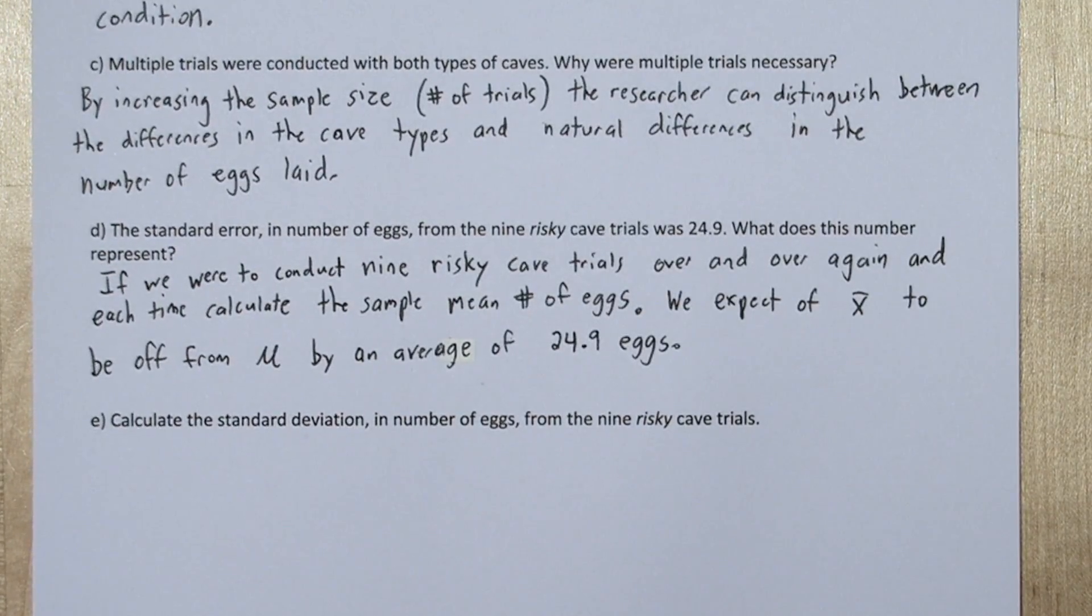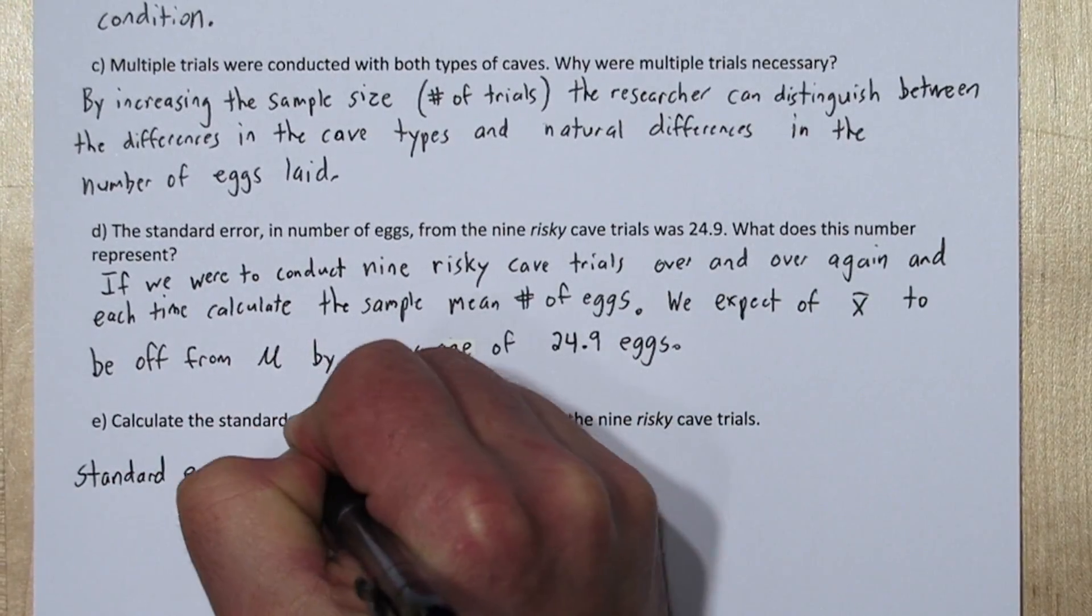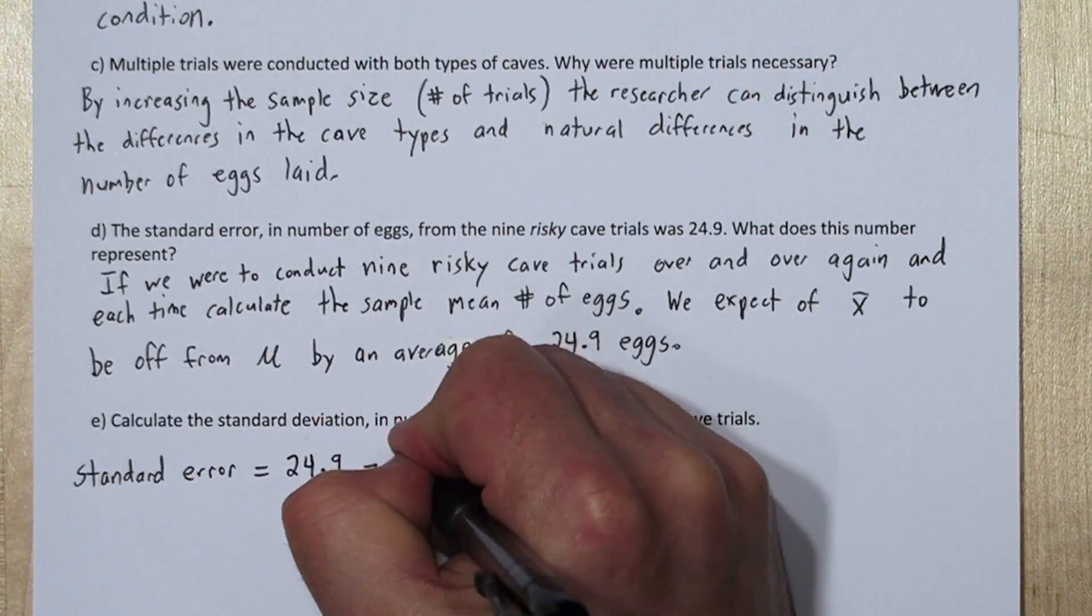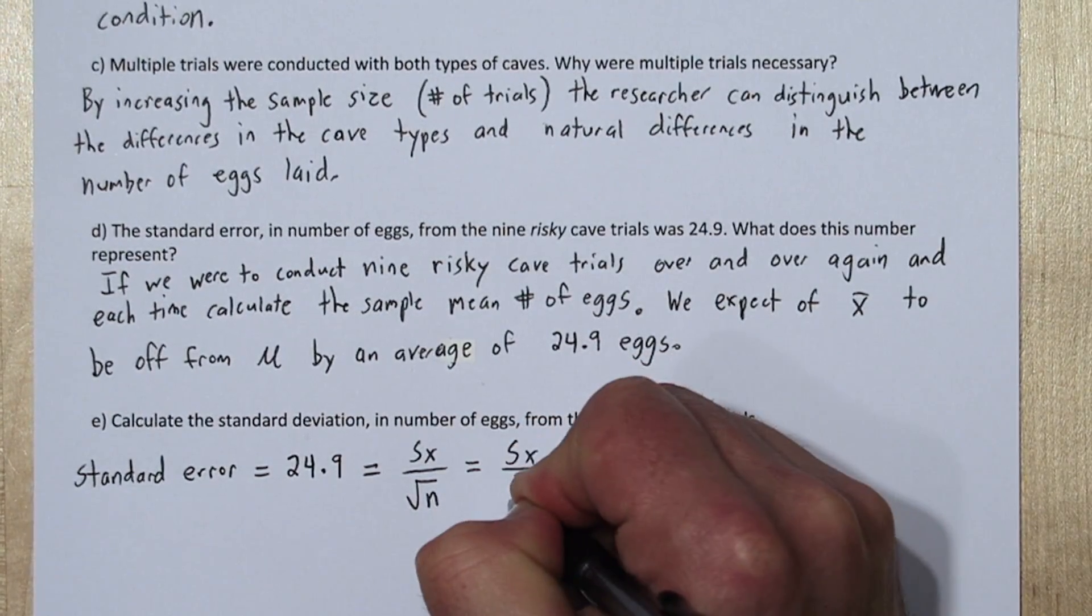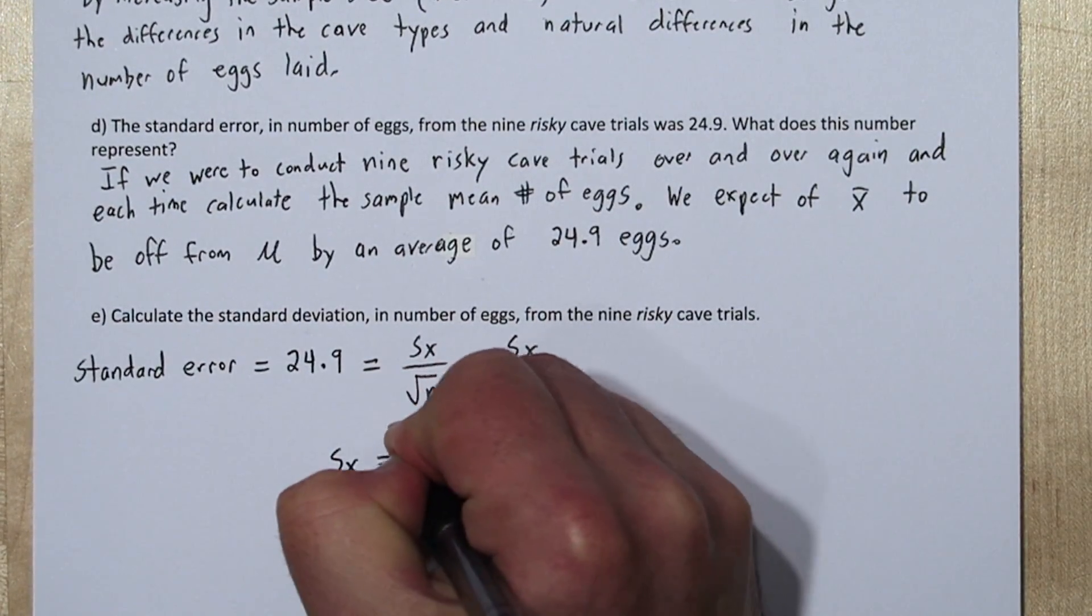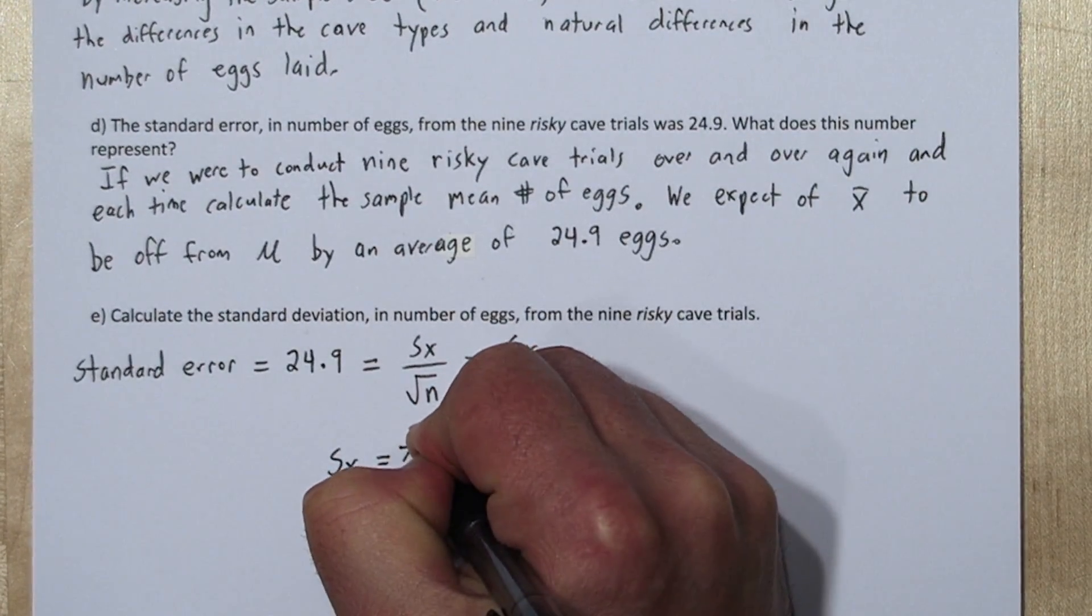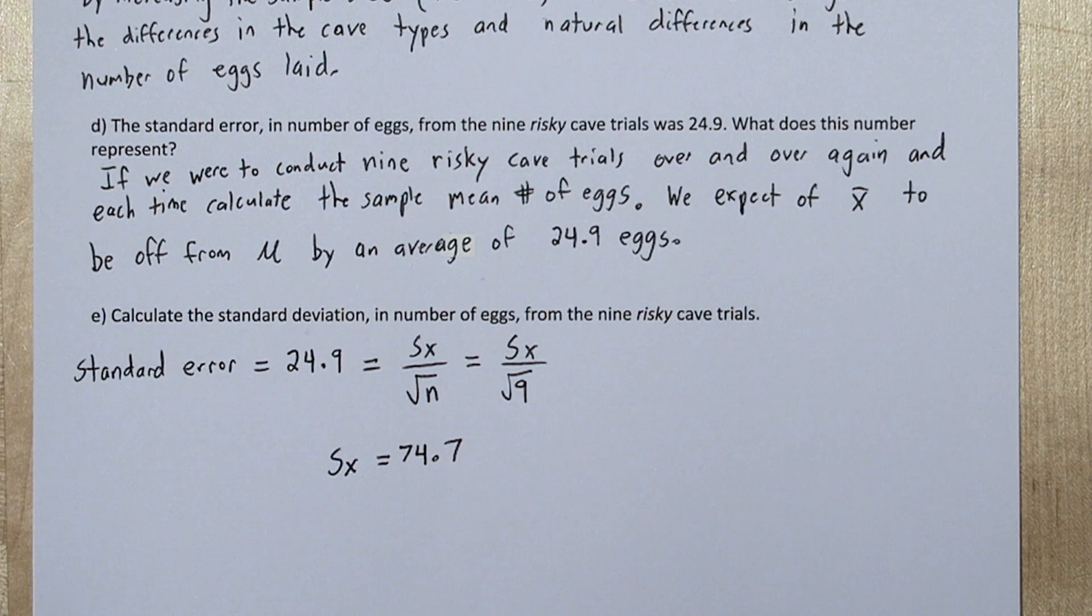Our standard error equals 24.9, and that equals s-sub-x, our sample standard deviation, over the square root of the sample size. We know the sample size was nine, which has a square root of three, so all we have to do is multiply this 24.9 by three, and that will give us our s-sub-x, our sample standard deviation. It turns out it's 74.7.